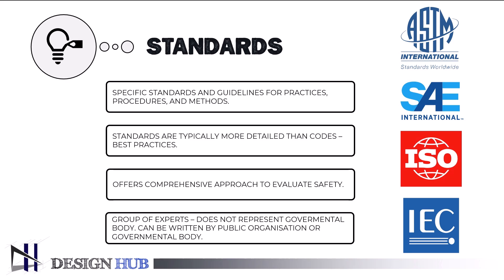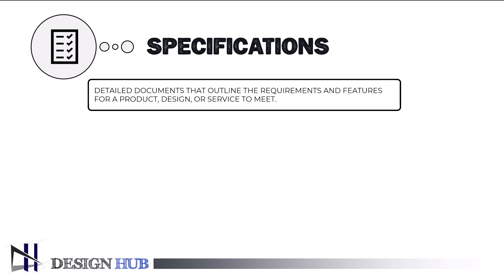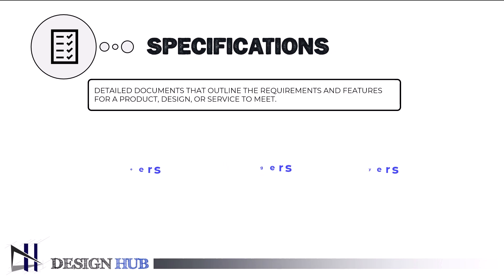The phrase 'codes and standards' is widely used in many industries, especially in the equipment construction industry, because the code may set a lower threshold even when the standard provides a thorough method to satisfy or assess the minimal safety or performance. The technical specifications of any particular process or product should be described precisely and in detail. Often, private businesses create specifications to handle extra needs relevant to a particular product or use.